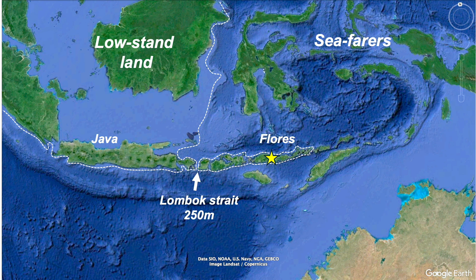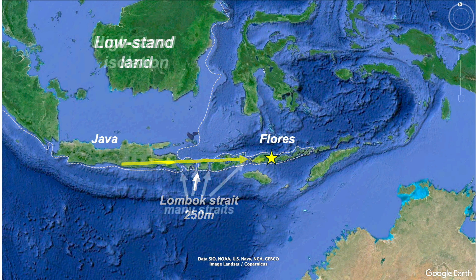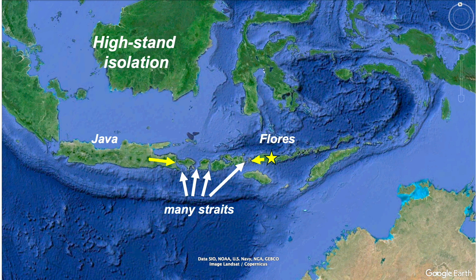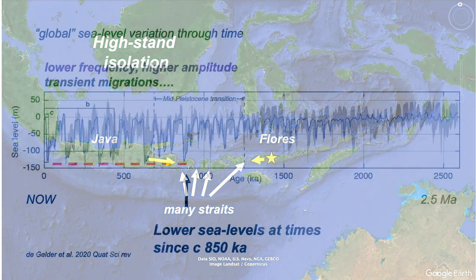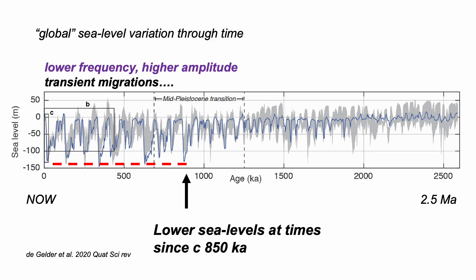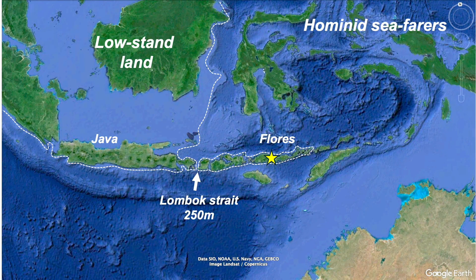To get there, their ancestors would have had to navigate the Lombok Strait, as migrations came from the west. But perhaps later rises in sea level made journeys too complex, and the Flores populations became isolated from other hominid populations, as did other megafauna. So obliquity-driven sea level change has promoted transient migrations between otherwise isolated island groups.